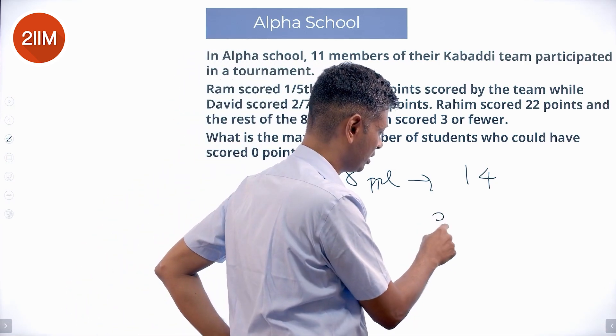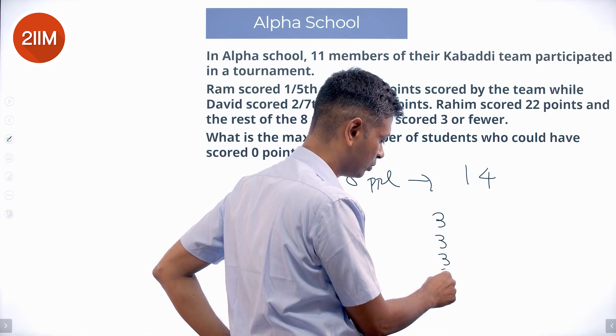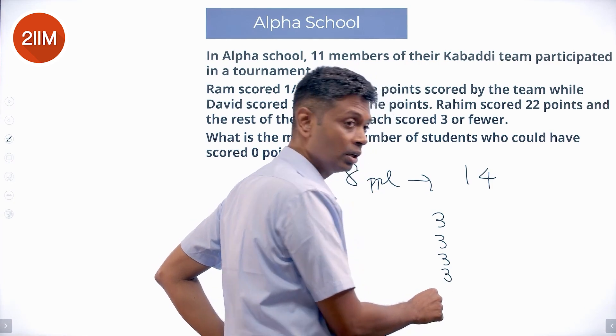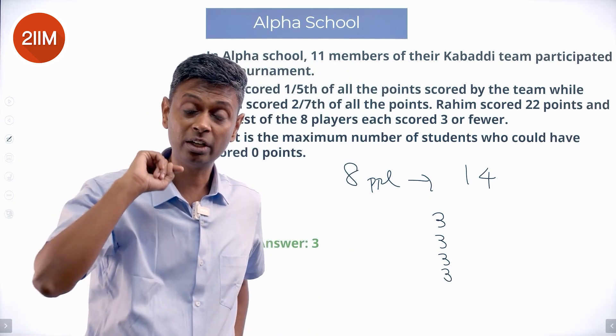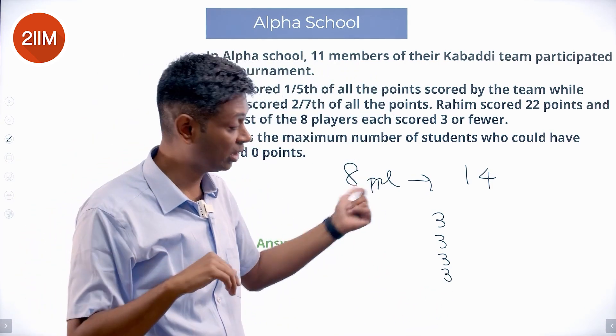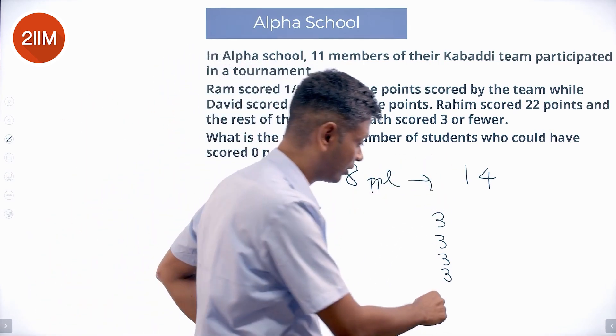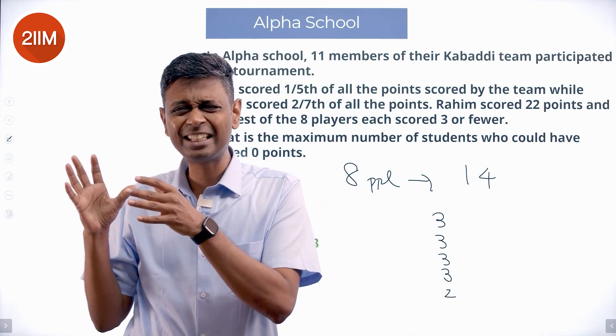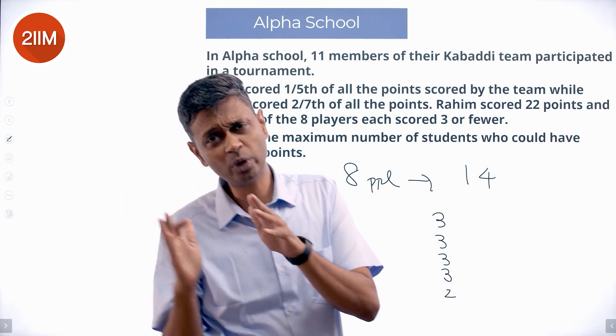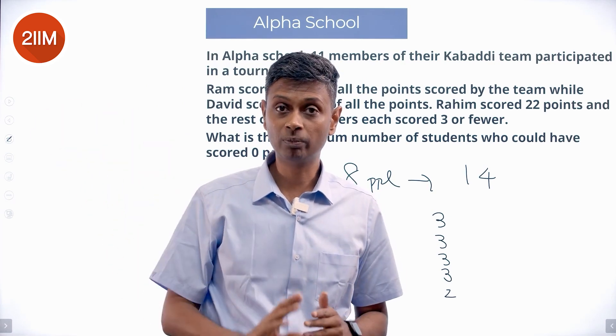Unless the maximum they can score is 3. Let me say the first guy gets 3, second guy gets 3, third guy gets 3, fourth guy gets 3. If the fifth guy also gets 3, it will become 15. 5 to 3 is 15. That's not possible. Again, only 14. Fifth guy gets 2.